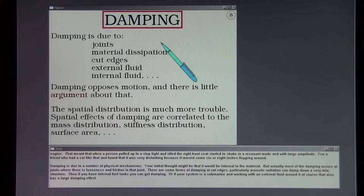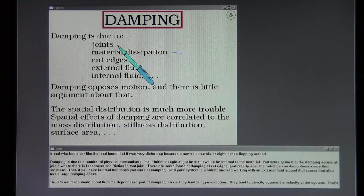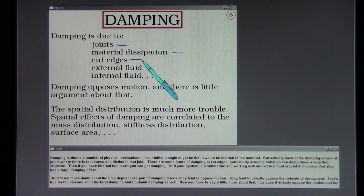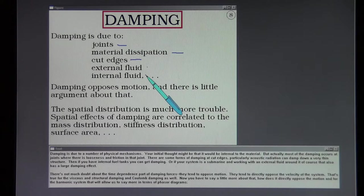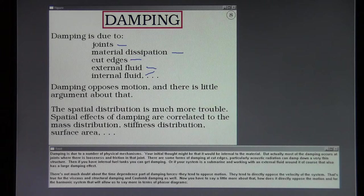Damping is due to a number of physical mechanisms. Your initial thought might be that it would be internal to the material, but actually most of the damping occurs at joints where there is looseness and friction in that joint. There are some forms of damping at cut edges, particularly acoustic radiation can damp down a very thin structure. Then if you have internal fuel tanks you can get damping, or if your system is a submarine and working with an external fluid around it, of course that also has a large damping effect.